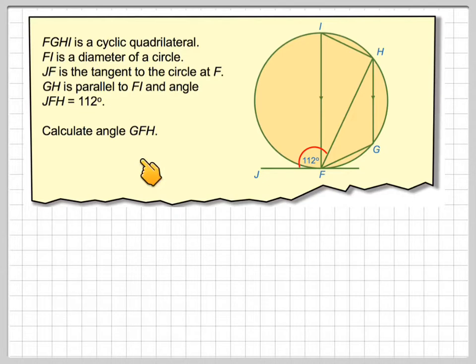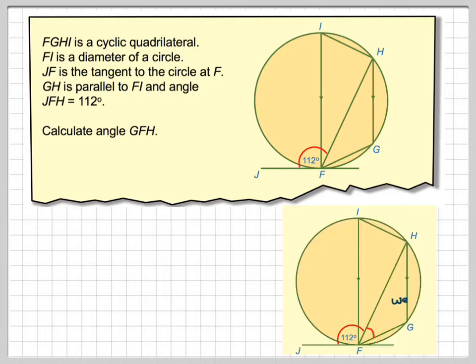Calculate angle GFH. Good idea to identify the angle that we need to find, which is this one. Now this requires a little bit of thought because we have to break it down into stages. So the first thing we're going to do is consider triangle FHI. Because this line here is the diameter, that's the center of the circle, this angle here will be 90 degrees.